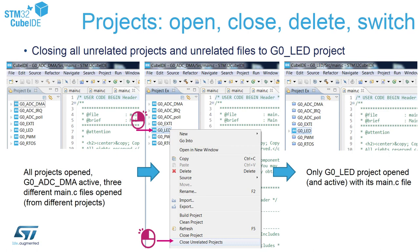Here is a more difficult example where we have three main.c files opened at the same time from different projects, and seven open projects simultaneously. Only one is active, but it is quite difficult to check which main.c file belongs to which project. To make order of it, select one project, right-click, and select close unrelated projects. All other projects which are not GZERO_LED are closed automatically together with all files related to those projects. Only one main.c remains and we can continue development.